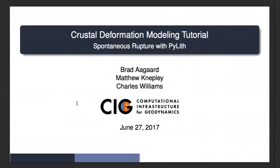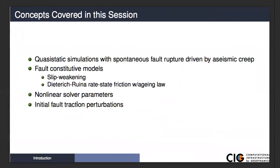On fault friction, the concepts we're going to cover in this session are: we'll focus on quasi-static simulations with spontaneous rupture driven by aseismic creep. Basically taking a 2D version of the subduction zone we looked at yesterday, and using the creep on the subducting slab to drive slip occurring on the subducting interface. I'll show examples for both slip weakening and rate and state friction, and we'll talk about the nonlinear solver parameters as well as how to impose initial fault traction perturbations.